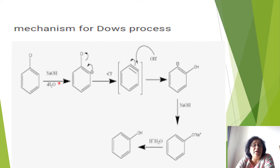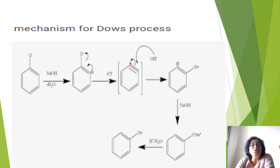H and OH⁻ combine to form water, which is expelled, and a negative charge is created on the ortho position. The aromaticity of the ring is disturbed, so this negative charge goes back onto the ring. The electrons form a bond, chlorine leaves due to its −I effect pulling electrons toward itself, and the negative charge forms a bond — leaving an intermediate.